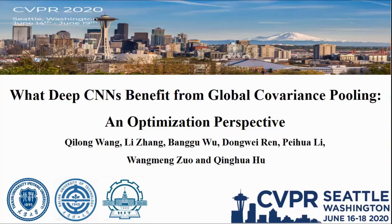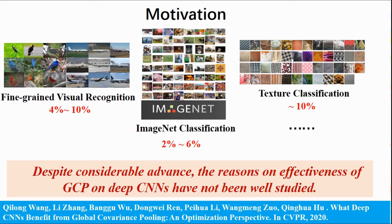Hello everyone. Our work is about what DPCNs benefit from global covariance pooling from an optimization perspective. Prior work had demonstrated that global covariance pooling has the ability to improve the performance of DPCNs, but the reason for the effectiveness of GCP on DPCNs has not been well studied.